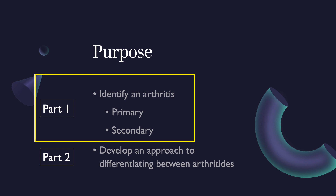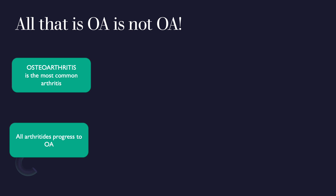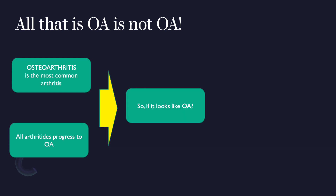In today's talk we will discuss identifying an arthritis and determining whether it is primary osteoarthritis or a secondary arthritis. The first thing to remember is that all that looks like osteoarthritis is not osteoarthritis. Even though OA is the most common kind of arthritis, all arthritis will progress to resemble it, so it's important to recognize when something that looks like OA may not be.